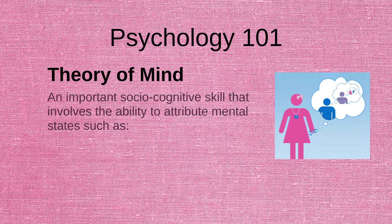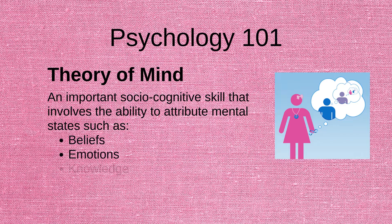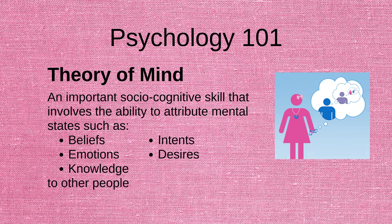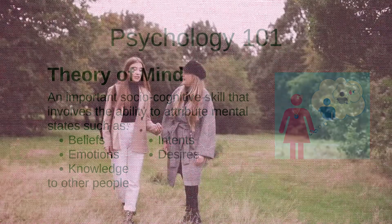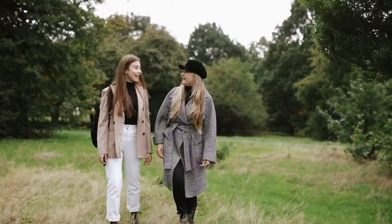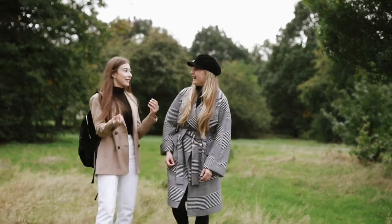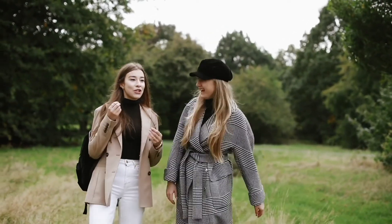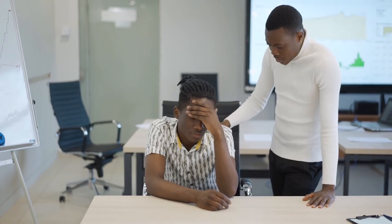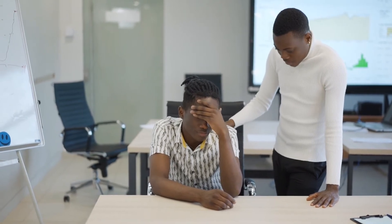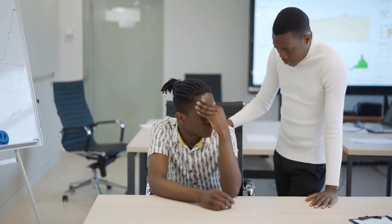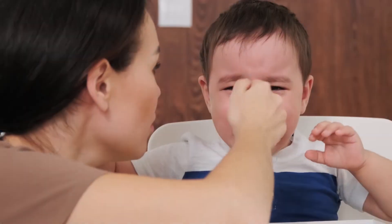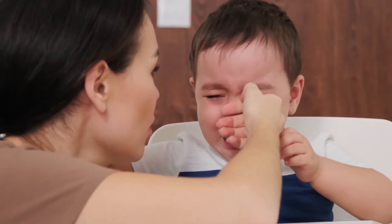Theory of Mind is an important socio-cognitive skill that involves the ability to attribute mental states such as beliefs, emotions, knowledge, intents and desires to other people. It involves the awareness that the mental states that I experience are different from the mental states that you experience. This ability to predict and infer the mental states of others, and to understand that these may differ from our own, has been shown to develop throughout our childhood.